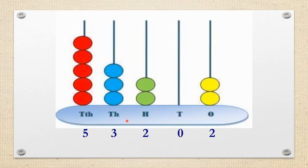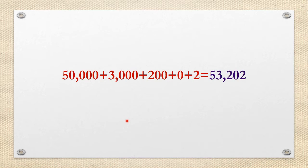Next example. In 1's place there are 2 beads, so it is 2. In 10's place there are no beads, so it is 0. Next, 2 beads in 100's place, so it is 200. Then 3 beads in 1000's place, so it is 3000. Finally, 5 beads in 10,000's place, which means 50,000. Now, 50,000 plus 3000 plus 200 plus 0 plus 2. When added together, we get the number 53,202.